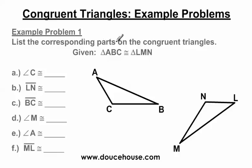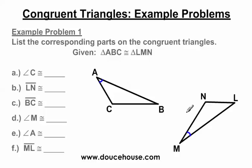List the corresponding parts on the congruent triangles. I have a given statement here — triangle ABC is congruent to triangle LMN. A lot of people will forget about this statement and immediately come down and try to solve the problem, thinking that angle A, for example, matches up with angle M. Or they might just guess, and it's not 100% certain if you do it that way. So it's really important that you focus on the statement here — it'll tell you which angles and which sides are congruent to each other.